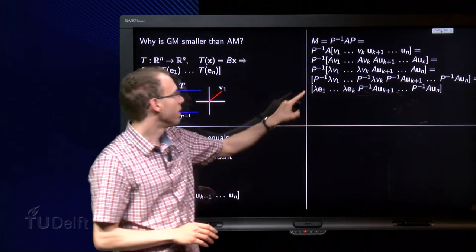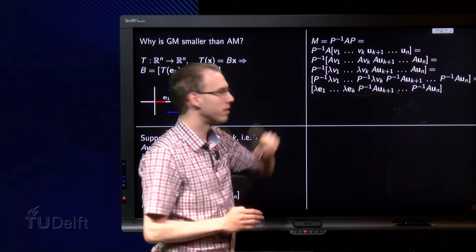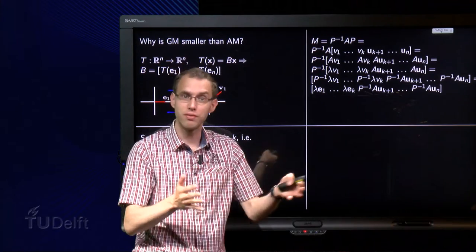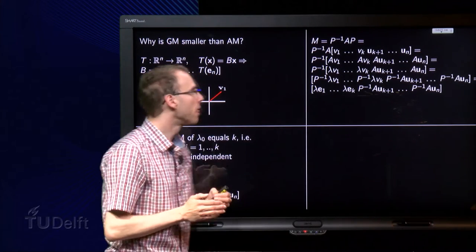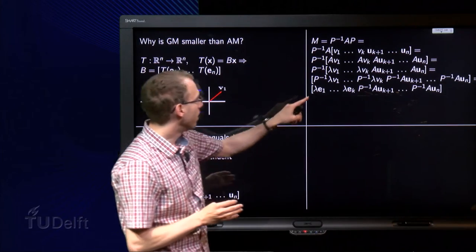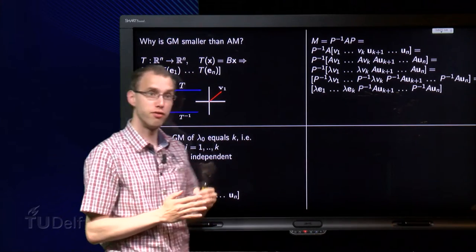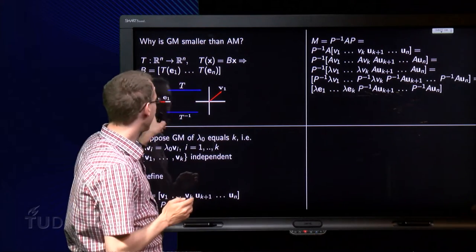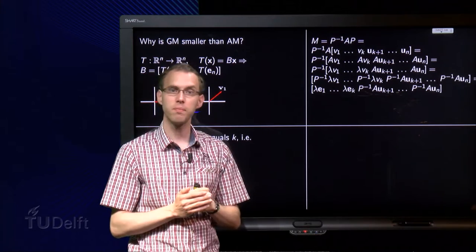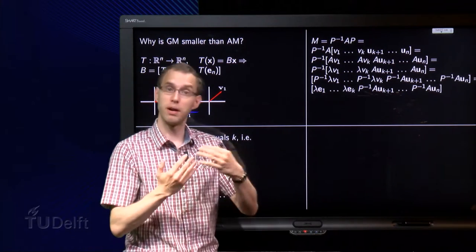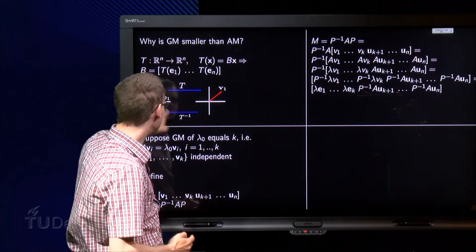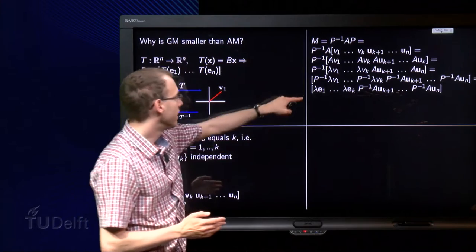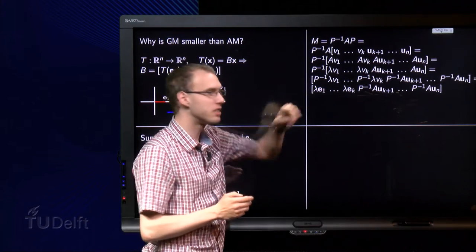So what happens over there? Again, we don't care. But here we have P inverse times λ₀ times v1. And there we need our picture. Because what happens if we compute P inverse times v1? Well, the matrix P contains the v1 up to vk. So we have this situation over here, where e1 is mapped by P to v1. And the inverse transformation, given by P inverse, maps v1 back to e1. So P inverse working on λ₀ times v1 yields λ₀ times e1. And for the other one it is the same.